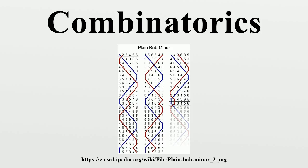Geometric combinatorics is related to convex and discrete geometry, in particular polyhedral combinatorics. It asks, for example, how many faces of each dimension can a convex polytope have? Metric properties of polytopes play an important role as well, e.g., the Cauchy theorem on rigidity of convex polytopes. Special polytopes are also considered, such as permutohedra, associahedra, and Birkhoff polytopes.